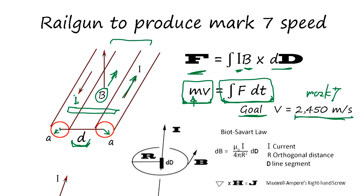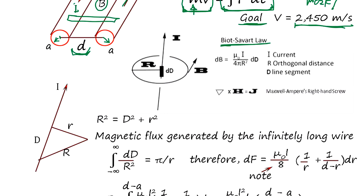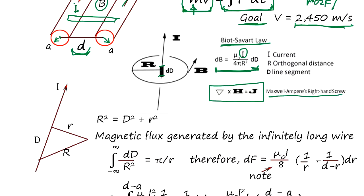This design requires at least high school or college level physics. The Biot-Savart law gives you the magnetic field generated by the current, where dL is a line segment. This is basically Maxwell-Ampere's right-hand screw law: when current flows, a magnetic field is generated in the right-hand screw direction.